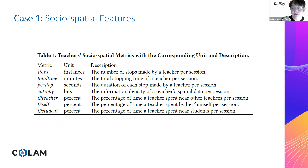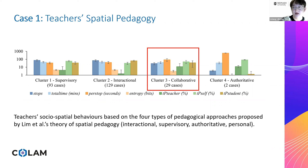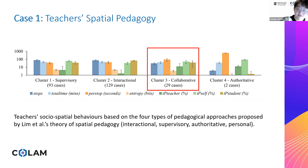We extracted seven social spatial metrics based on teachers' stopping behaviors, spatial distribution across nine subspaces, interaction with other teachers and students, and time spent alone. Clustering analysis was then performed to generate descriptive analytics characterizing teachers' spatial movements. The identified clusters are similar to the theory of spatial pedagogy, which proposes four types of space: interactional, supervisory, authoritative, and personal. However, instead of personal space, we identified a novel category — collaborative space — where teachers spend significantly more time working with other teachers in this open learning environment.